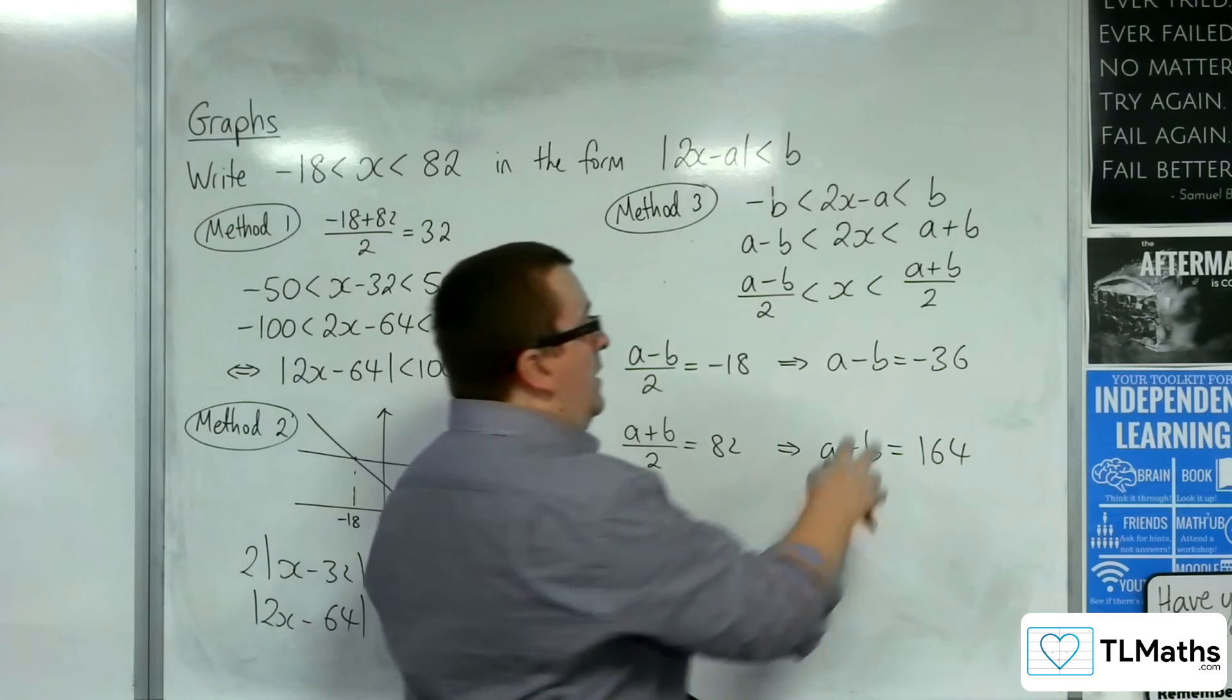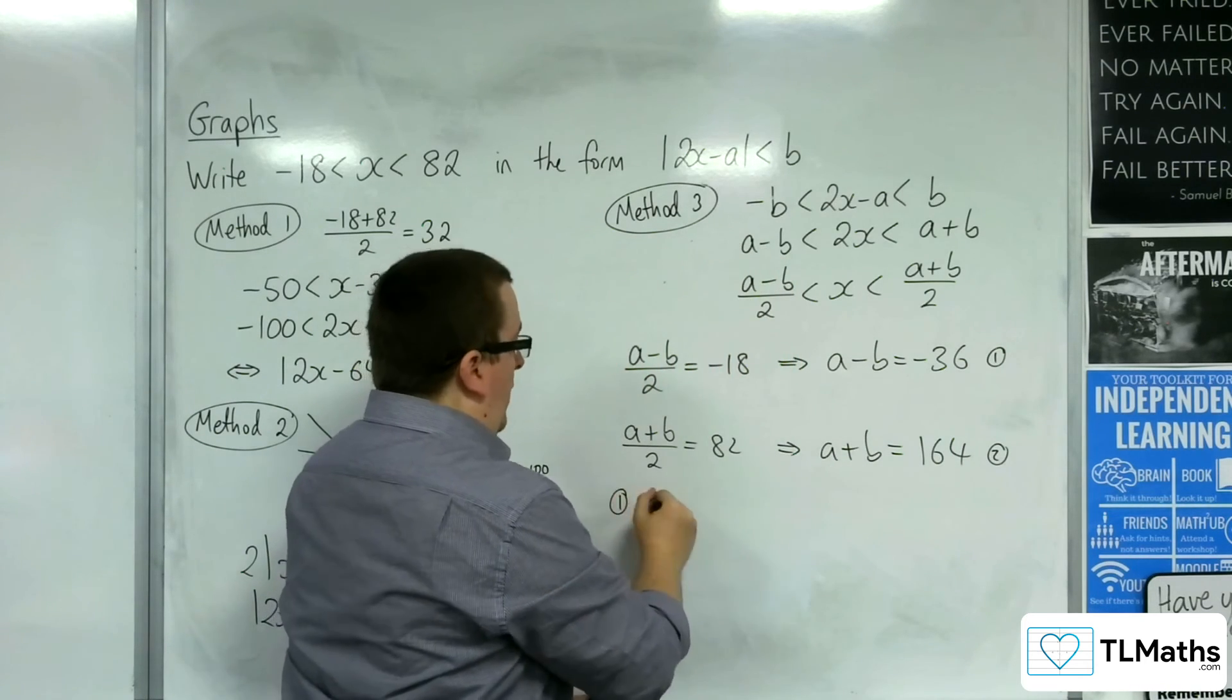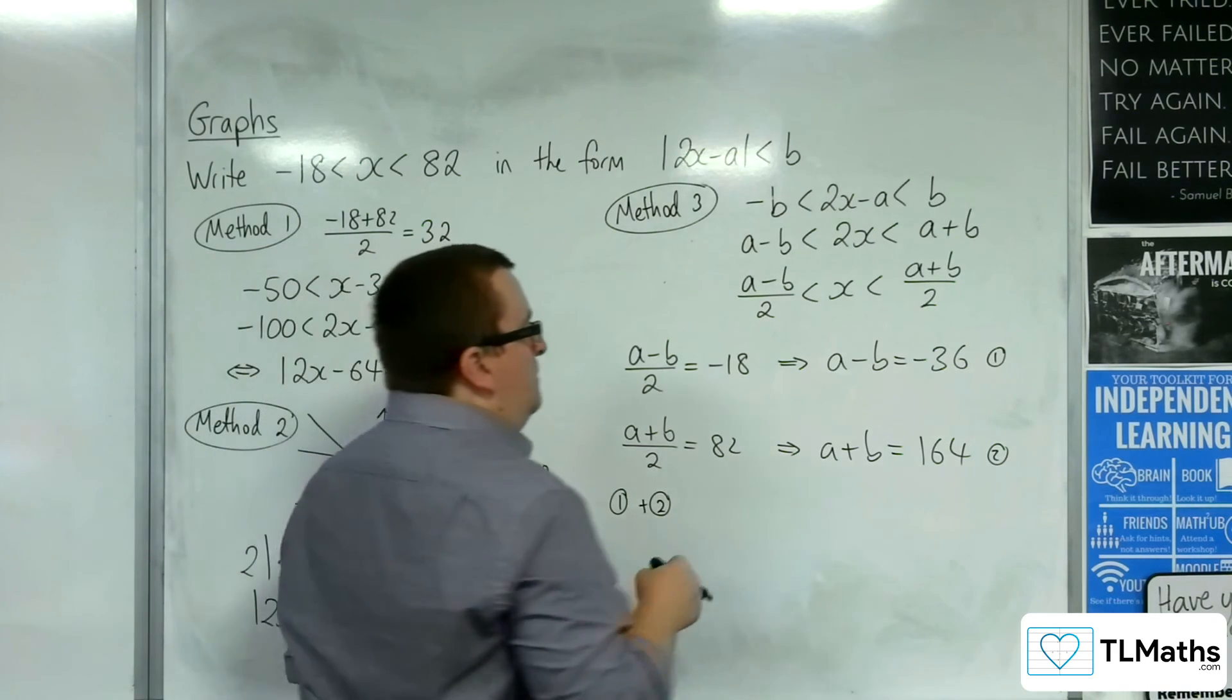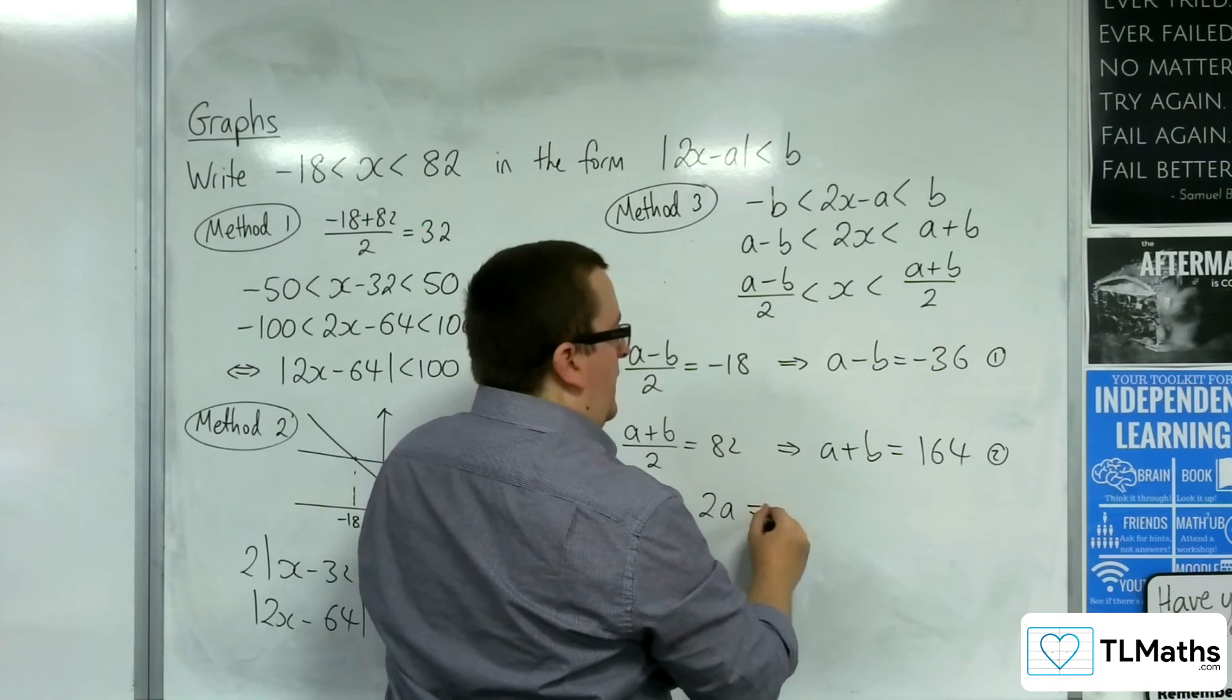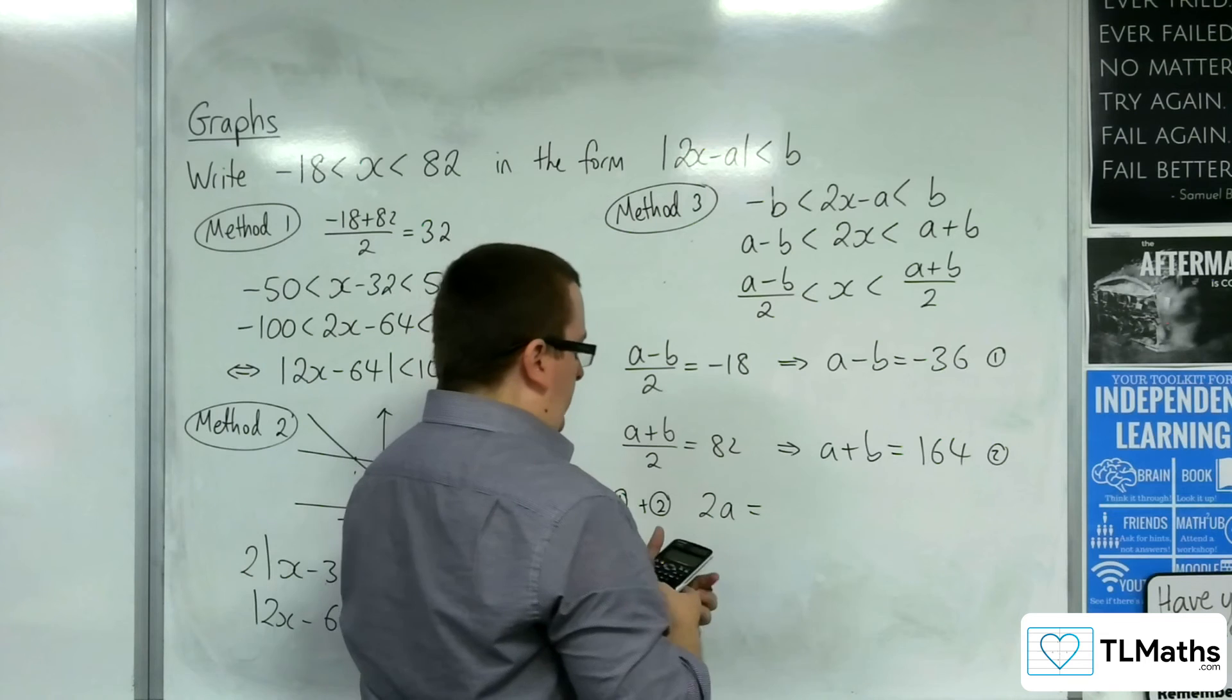We can then add both of these two together. So if we do 1 plus 2, that knocks out the b's. Or you can substitute them into your calculator's simultaneous equation solver. We're going to get 2a is equal to, so we've got 164 take away 36, so 128.